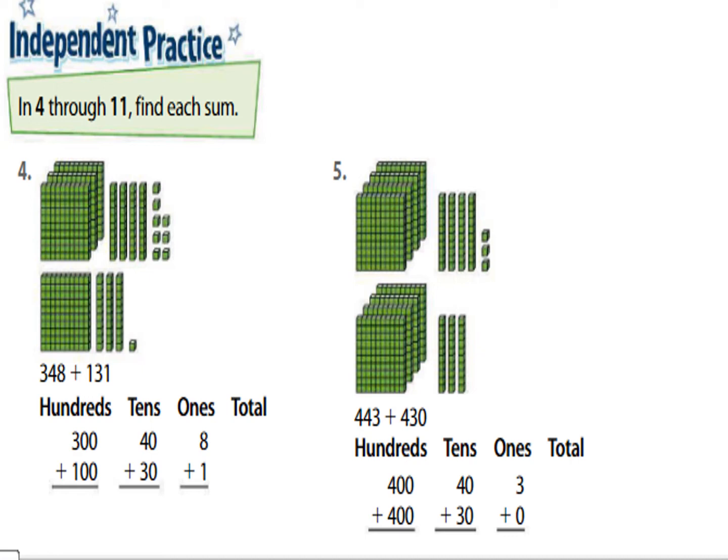Now look at question number 5: 443 plus 430. Add hundreds: 400 plus 400 equals 800. Then the tens: 40 plus 30 equals 70. Now add the ones: 3 plus 0 equals 3. Now find the total: 800 plus 70 plus 3 equals 873. The same method applies for all questions from 6 through 11.